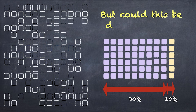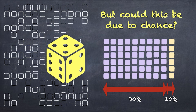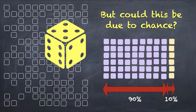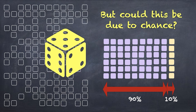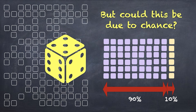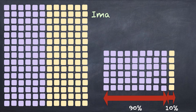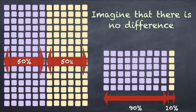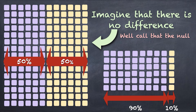But could this be just due to chance? Might it be the case that there are equal numbers of purple and yellow people in your population, and that you just happened to, by chance, select a sample with this extreme proportion of purple people? Well, of course this is possible. Your intuition is that it's unlikely, or shall we say, improbable. Let's imagine that there is in fact no difference — that there are equal numbers of purple and yellow people. We're going to call this our null hypothesis.